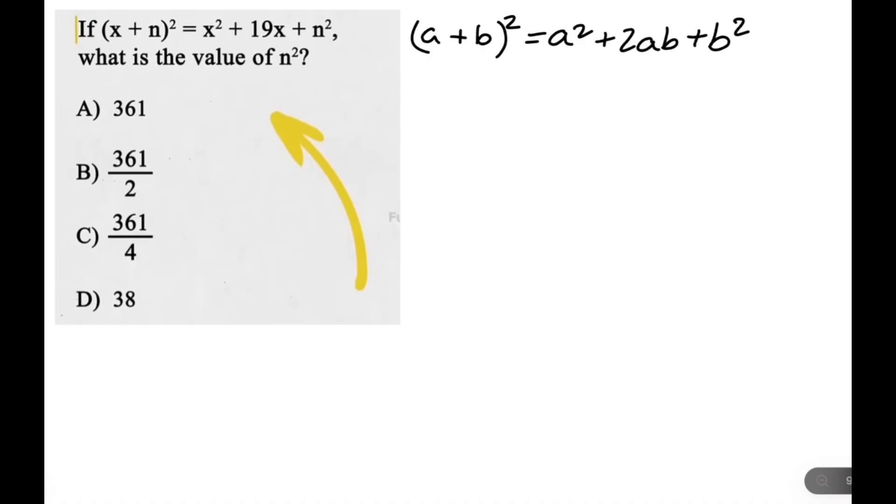And you might also notice that this equation looks very similar to the one we have in the question. So let's write the question right below. x plus n squared is equal to x squared plus 19x plus n squared. Now, it looks very similar. It seems like they're just replacing the a with the x and the b with the n.